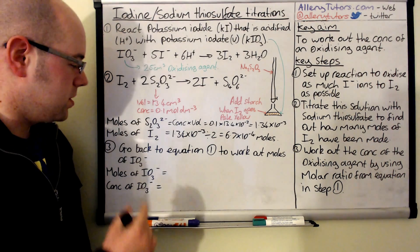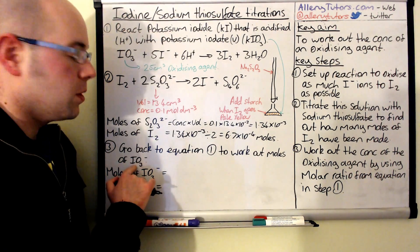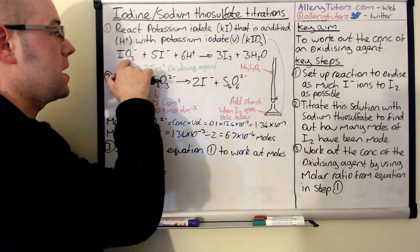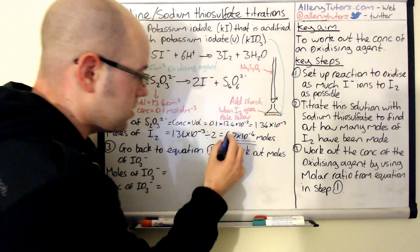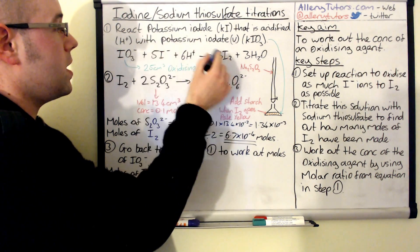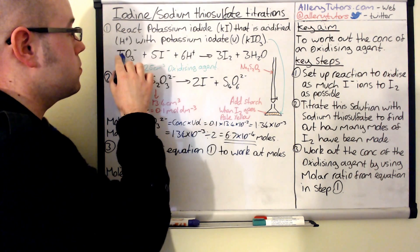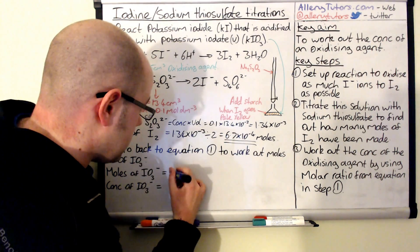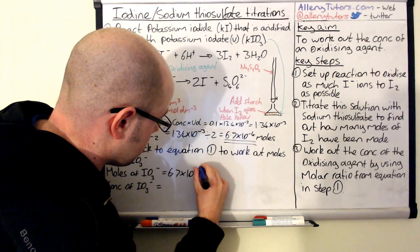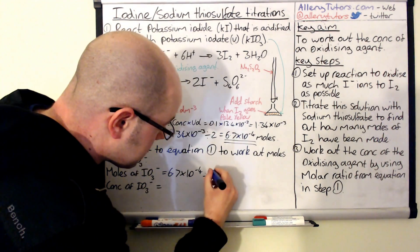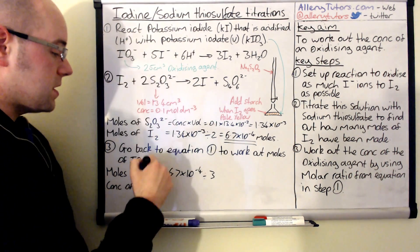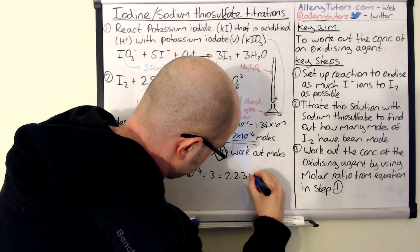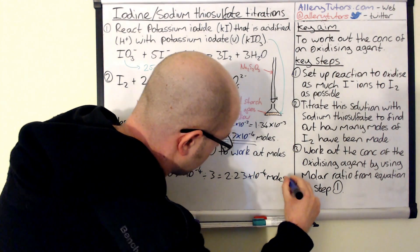Next we go back to equation 1 and work out the number of moles of IO₃⁻. In that equation it's a 3:1 ratio — 1 mole of oxidizing agent produces 3 moles of iodine. So we take 6.7 × 10⁻⁴ and divide by 3, which gives us 2.23 × 10⁻⁴ moles of IO₃⁻.